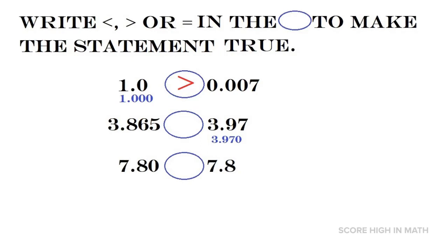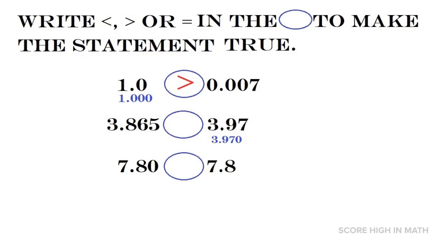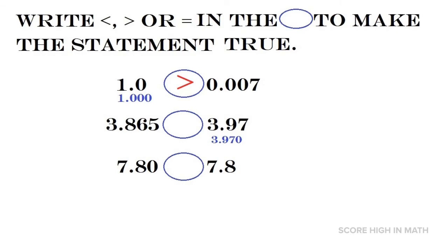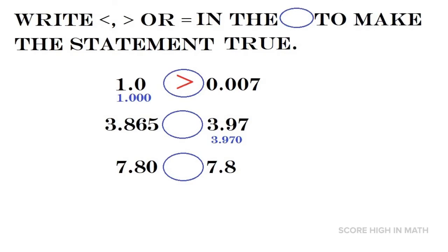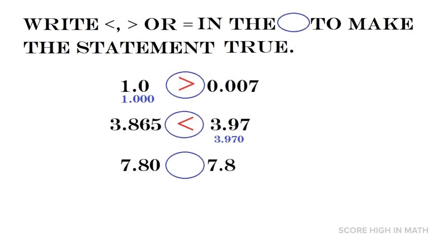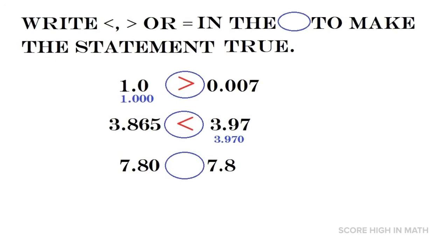For number two, we compare 3.865 with 3.97. We are comparing up to the thousandths place, so we add a zero after 3.97 to make it 3.970. By comparing the tenths place, we can spot right away that 9 is bigger than 8. Therefore, 3.865 is less than 3.97.